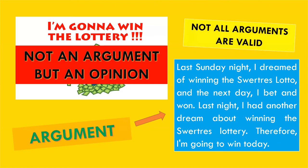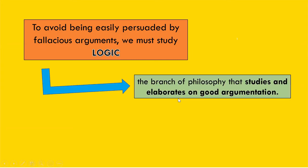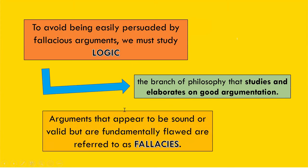There are some opinions that others hold to be true even though they are not. We can be easily deceived and persuaded by incorrect arguments if we are not cautious when evaluating them. To avoid being easily persuaded by fallacious arguments, we must study logic — the branch of philosophy that studies and elaborates good argumentation. In logic, arguments that appear to be sound or valid but are fundamentally flawed are referred to as fallacies.